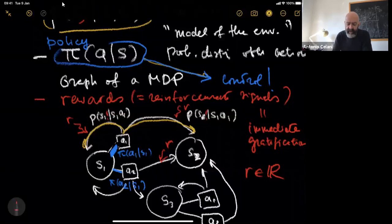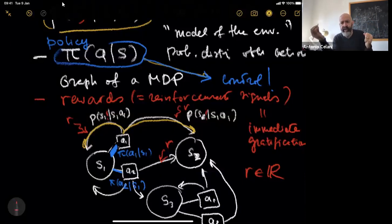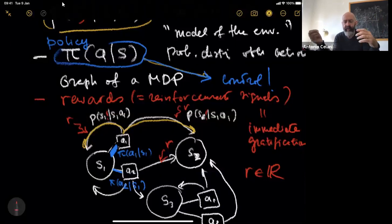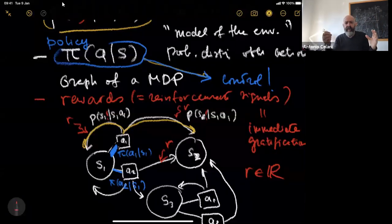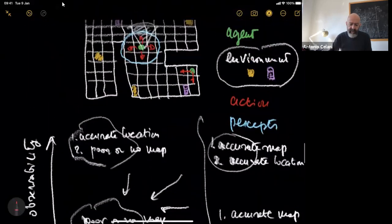For instance, the rewards in our bandit problems are what you get once you pull the arm — that's the obvious and immediate interpretation. In the navigation task in the grid world, it's how much dust you collect if you move to another point. Remember the grid world: you are in a state S, which is your green dot here, you take an action, and you end up in a new state S prime.